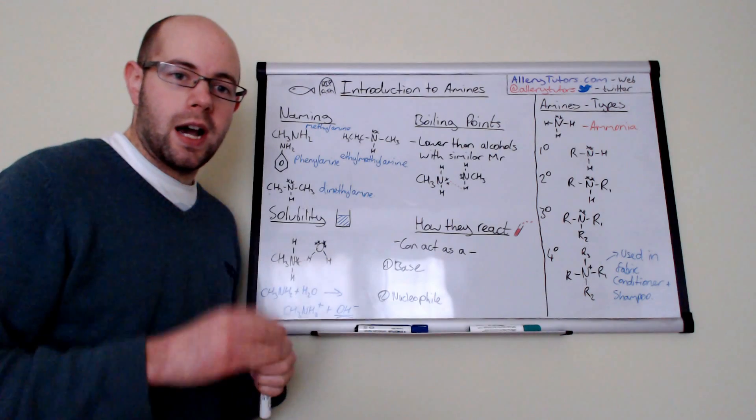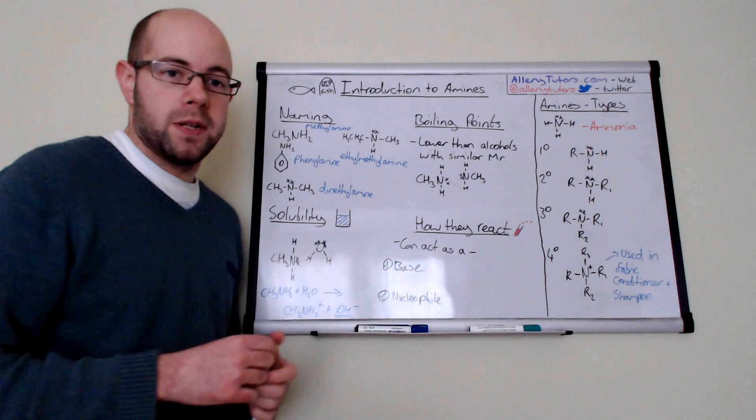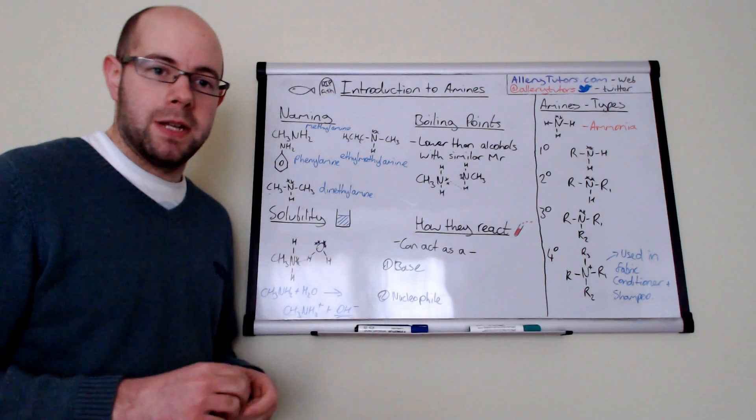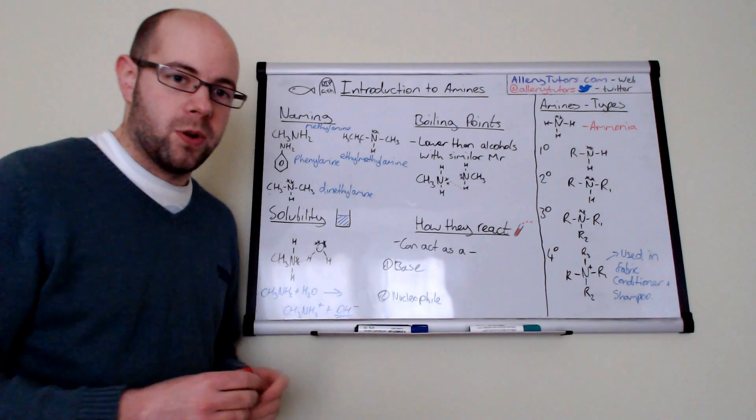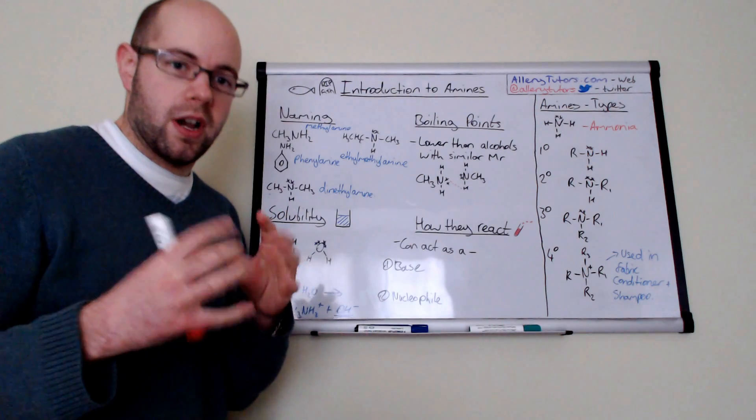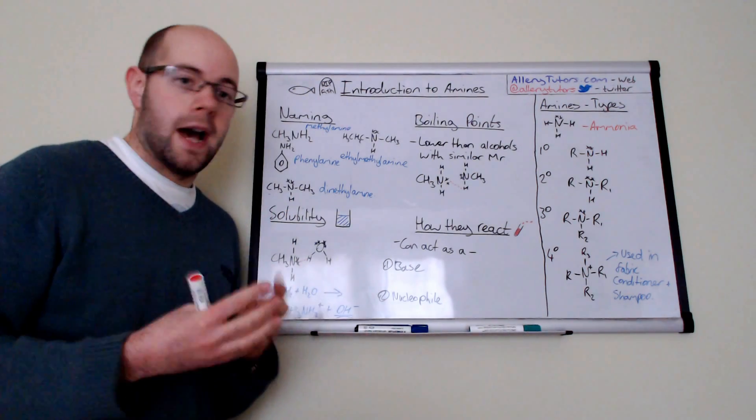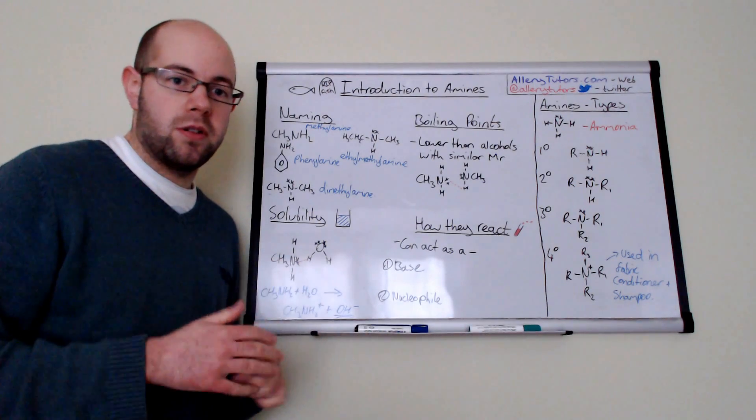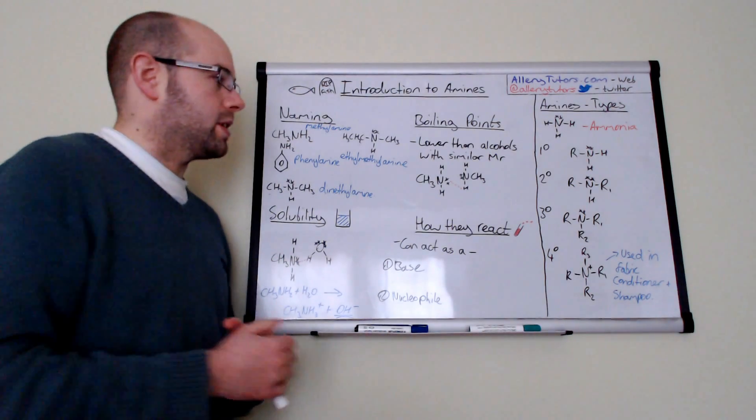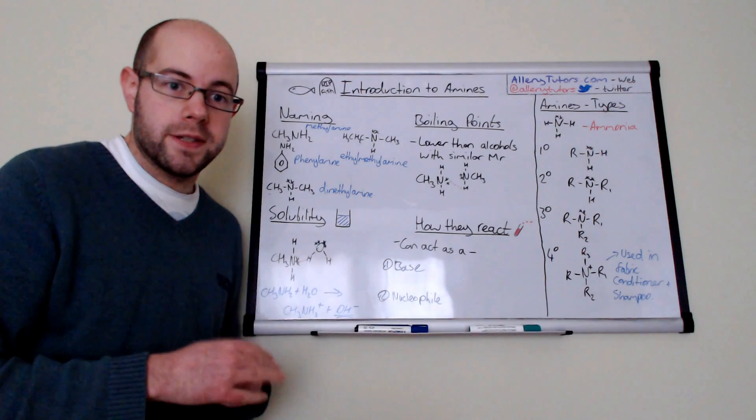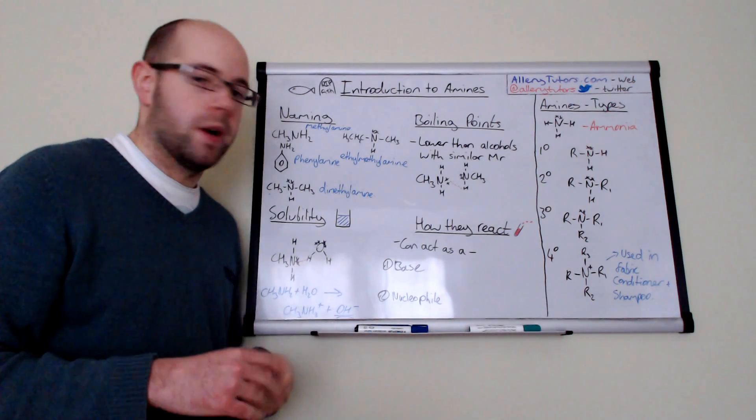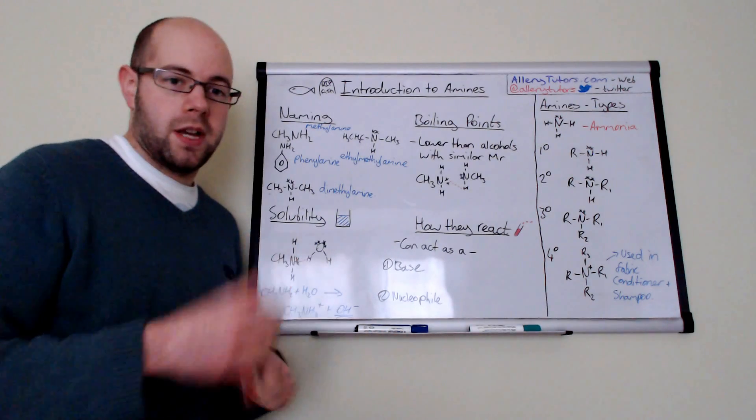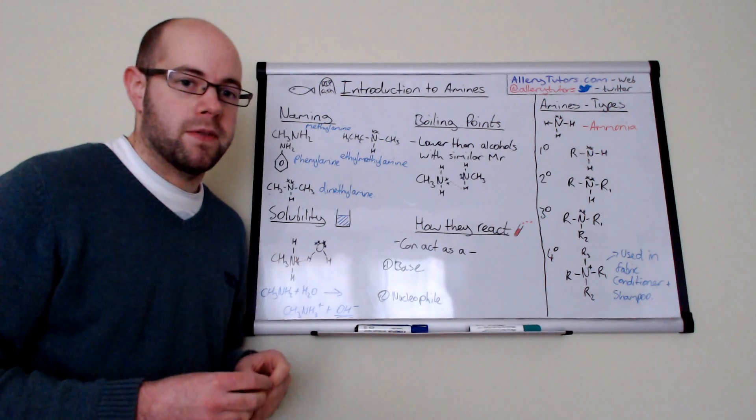So if we had an alcohol with a similar molecular mass as this amine, the alcohol will actually have a slightly higher boiling point because the oxygen is a lot more electronegative than the nitrogen in amines. So because the oxygen is more electronegative, you generally get a stronger hydrogen bond between alcohol molecules than you do with amine molecules. So just make sure you're aware of that comparison. But compared to just standard alkanes, for example, without the amine group on, they're a lot higher because of this ability to hydrogen bond. Whereas alkanes can only interact by van der Waals.